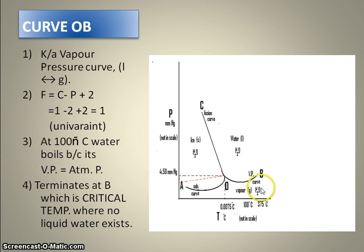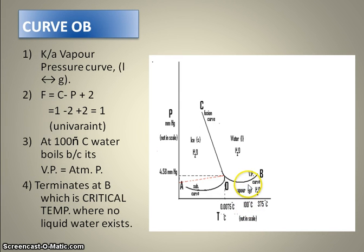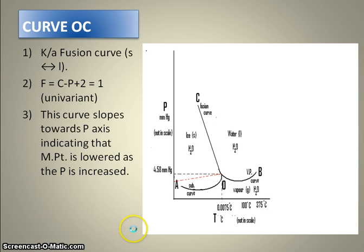At 100°C, water boils, meaning the atmospheric pressure is equal to the vapor pressure of water. And at 375°C, which is known as the critical temperature, no liquid water exists.